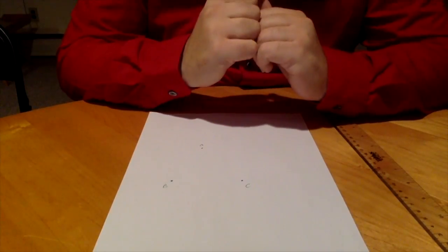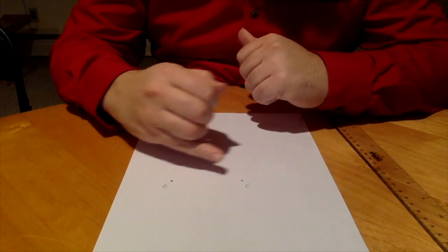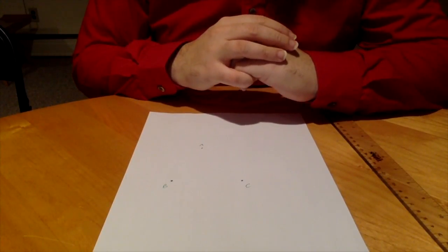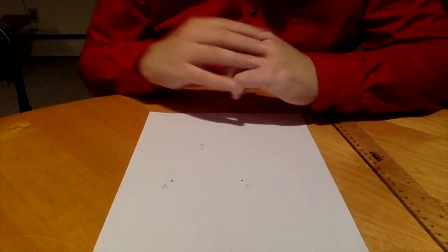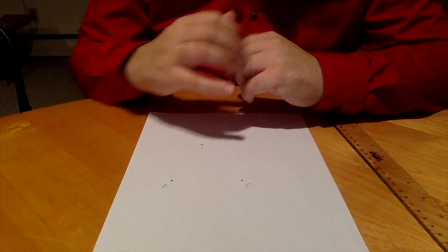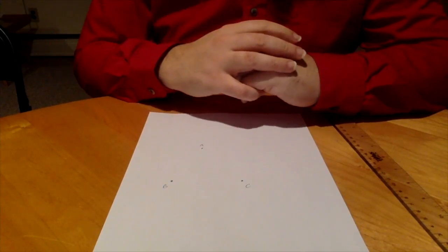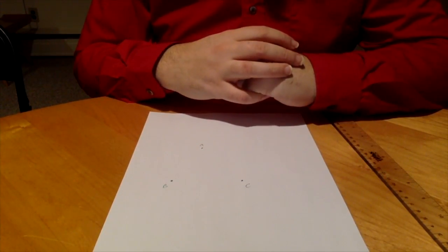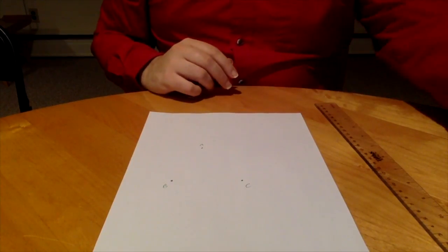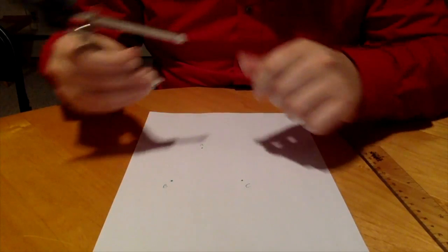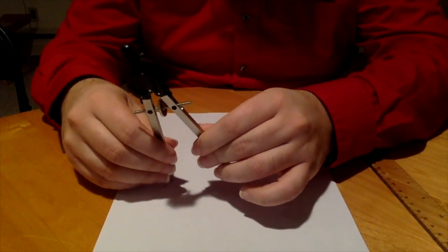Another thing you can do with perpendicular bisectors is if you have three points, you can find out the point that's equidistant from all three points. If we're looking for a point that's the same distance from every one of these points, we can find that using perpendicular bisectors. So take two points. The two easiest I see right here first are B and C, so let's go with that.